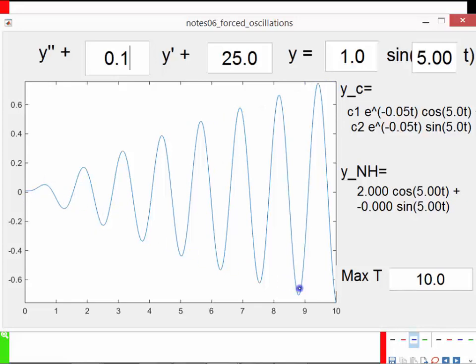We still see amplitude growing, but the math is quite different. Now because the complementary solution has negative exponentials times cosine, even though these frequencies are not actually exactly the same,